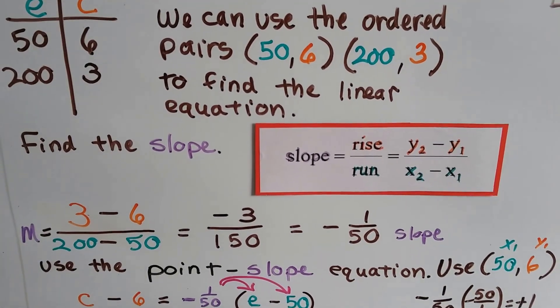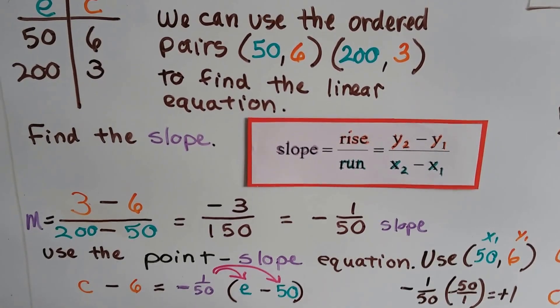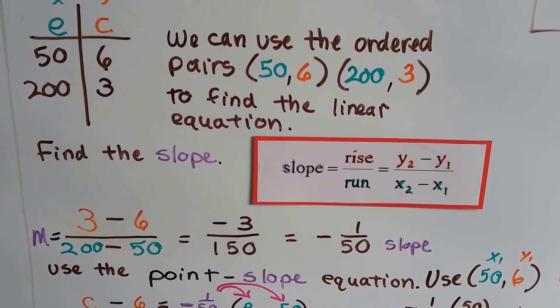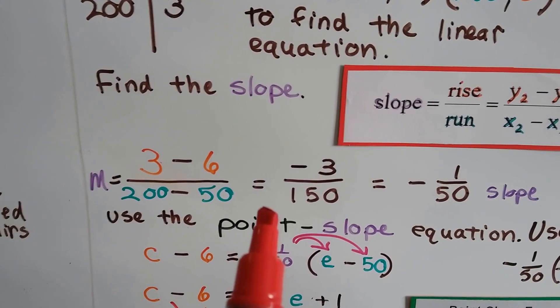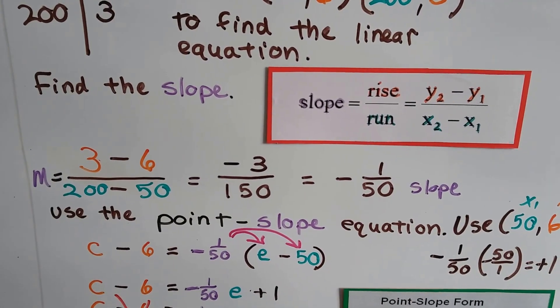So the first thing we do is find the slope using these two ordered pairs, and we do our subtraction. 3 take away 6 as our y2 minus y1, and 200 take away 50 as our x2 minus x1. And we get negative 3 over 150. Now that simplifies to a negative 1/50th slope.